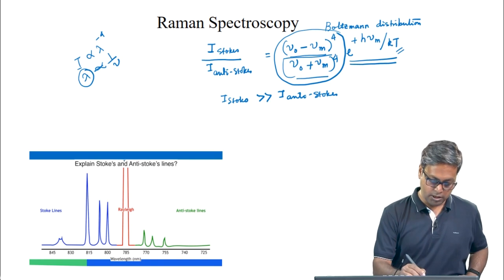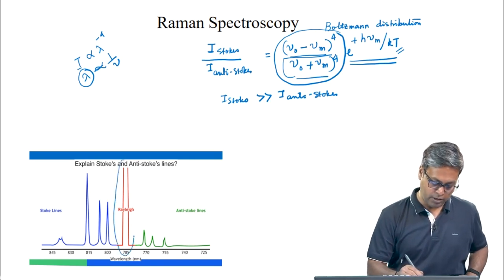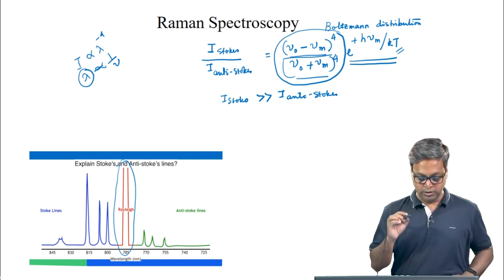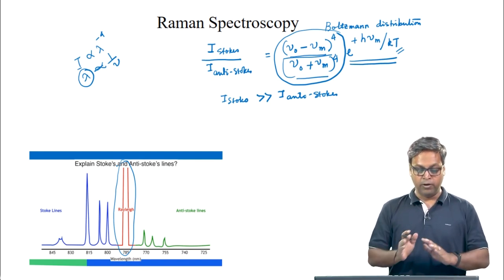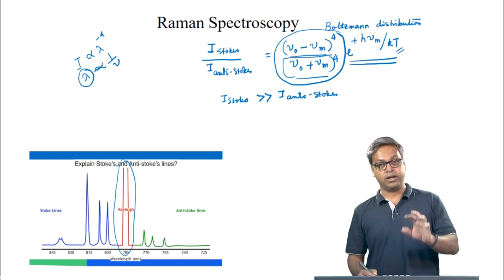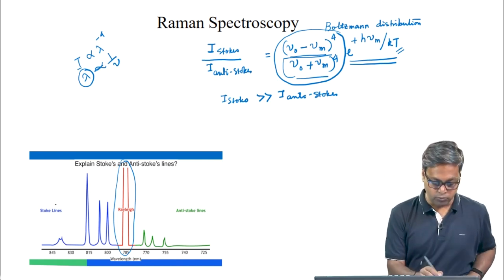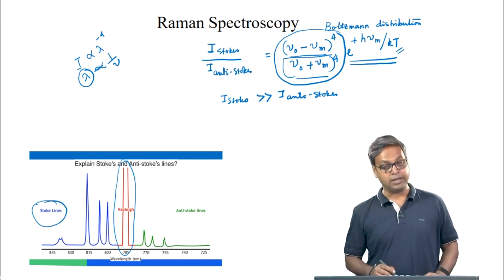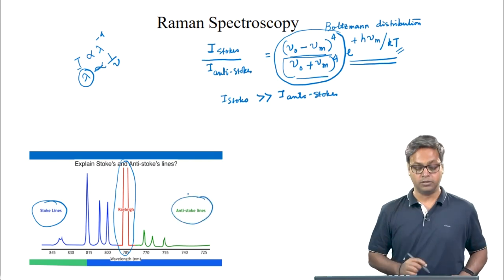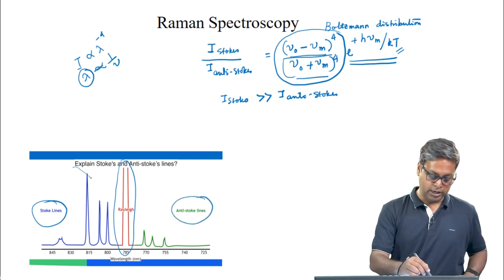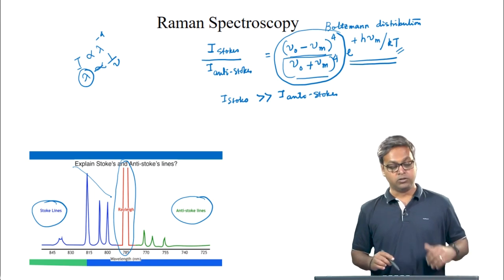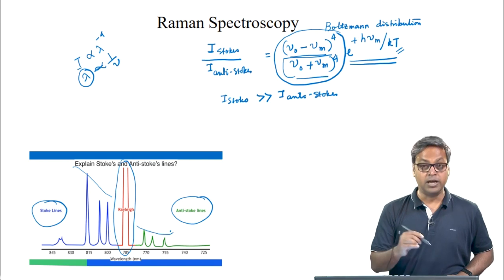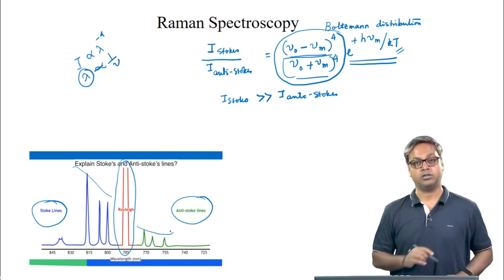We can see in the figure that we have the Rayleigh scattering at the central wavelength, Stokes lines at longer wavelengths compared to the Rayleigh scattering, and anti-Stokes lines at shorter wavelengths. The intensities of the Stokes lines are much larger compared to those of the anti-Stokes lines.